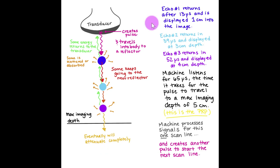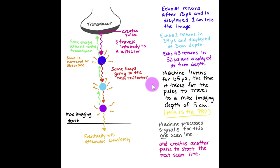Once the pulse enters the body, the first reflector it interacts with will return an echo. In this example, the first echo comes back from a reflector that took 13 microseconds for the time of flight — into the body, to the reflector, and back to the transducer. That echo is displayed at one centimeter into the image. Echo number two comes back after 39 microseconds, and echo number three after 52 microseconds. The machine listens for up to 65 microseconds, which is how long it takes for the pulse to travel to the max imaging depth and return. This time — from pulse creation through waiting for echoes — is the PRP, the pulse plus waiting time.